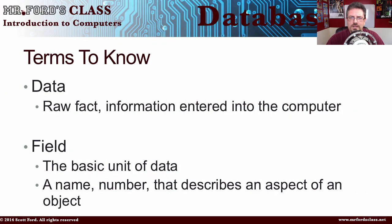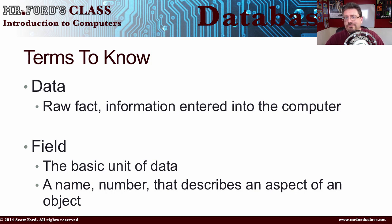So this is what we're looking at with databases: interrelated items that we can search, mine, and use for our benefit. Let's look at some key terms. Data — and this is not just a character on Star Trek: The Next Generation — is raw facts, information entered into the computer. A field is the basic unit of data: a name or number that describes an aspect of an object. For example, a field could be birthdays, street addresses, or color preferences — what's your favorite color? It's information that has a name and some sort of description to it.